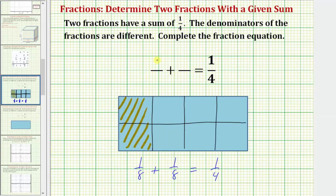Let's go ahead and use the fraction one-eighth, and we'll assume the one-eighth we're referring to is this piece here. So if we can find a fraction to model the remaining piece using a different denominator, we can complete our equation.